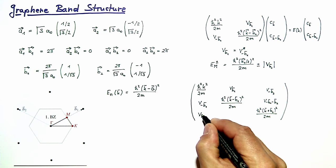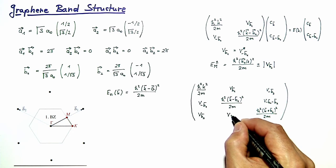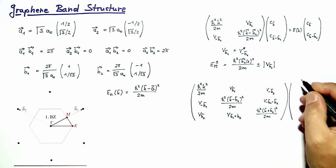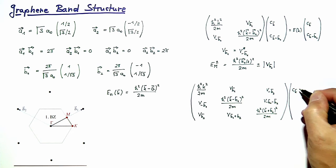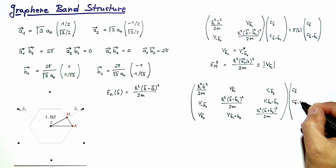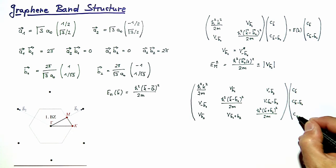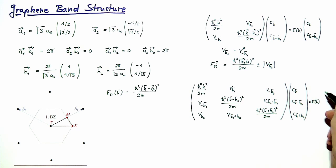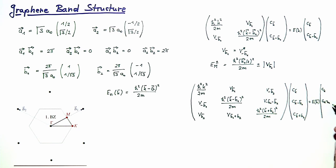The remaining off-diagonal elements are V(b2) and V(b1 + b2). The three components of the coefficient vector are c_k, c_{k−b1}, and c_{k+b2}. The full expression equals E(k) times the same coefficient vector (c_k, c_{k−b1}, c_{k+b2}). This is the secular equation for the K-point.